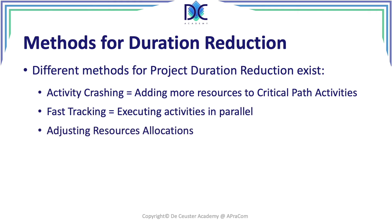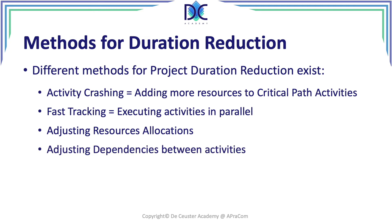We can also look at adjusting resource allocations — moving resources from non-critical activities to critical activities to find ways to complete those activities faster. The people assigned to those new activities need to have the competence to do the work. Alternatively, we can put people in supporting roles, helping those with the knowledge to concentrate fully on the work.